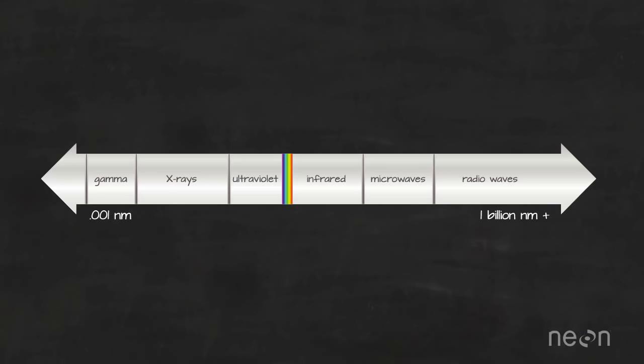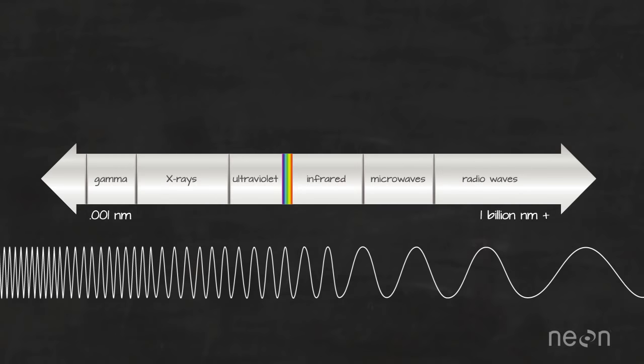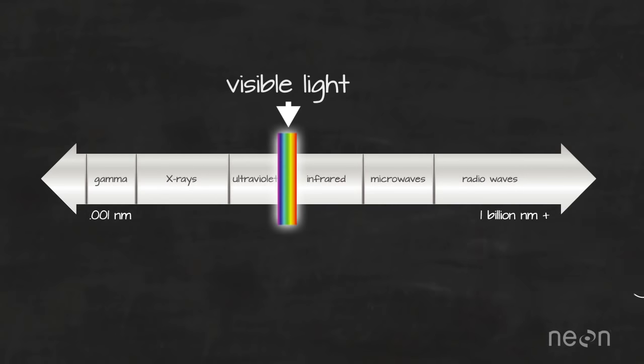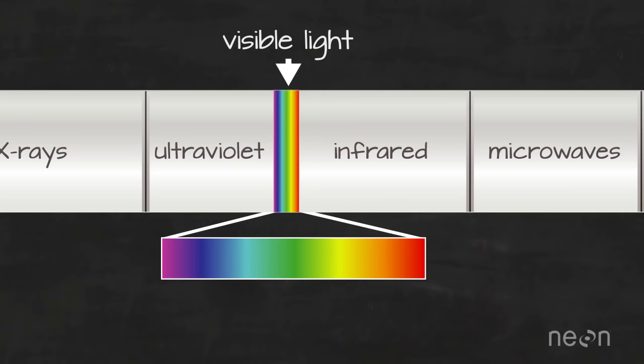To answer this question, let's have a look at the electromagnetic spectrum, which is composed of thousands of wavelengths of energy. Visible light, what we see with our eyes, is contained in the blue, green, and red portions of the spectrum.